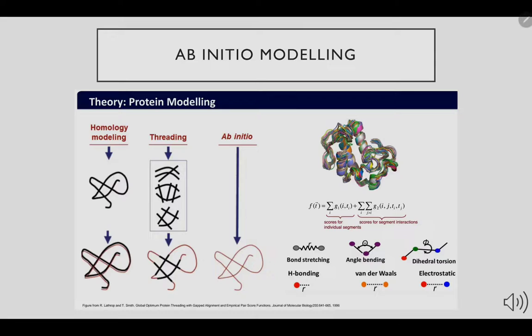Threading utilizes a similar homology-based method but only for specific domains of the protein. These two methods were not possible for the Zein protein due to lack of well-characterized homologous proteins. This is because Zein is a largely disordered protein and thus lacks homology with other proteins.